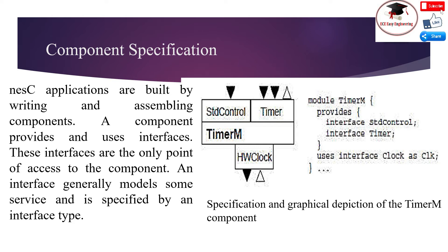Downward-pointing arrows depict commands and upward arrows depict events. Although the same interaction between the timer and its client could have been provided via two separate interfaces, grouping these commands and events in the same interface makes the specification much clearer and helps prevent bugs when wiring components together. Split-phase operations are cleanly modeled by placing the command request and event response in the same interface. The send interface has the send command and the send done event. The analog-to-digital converter interface is similarly used to model split-phase sensor value reads.